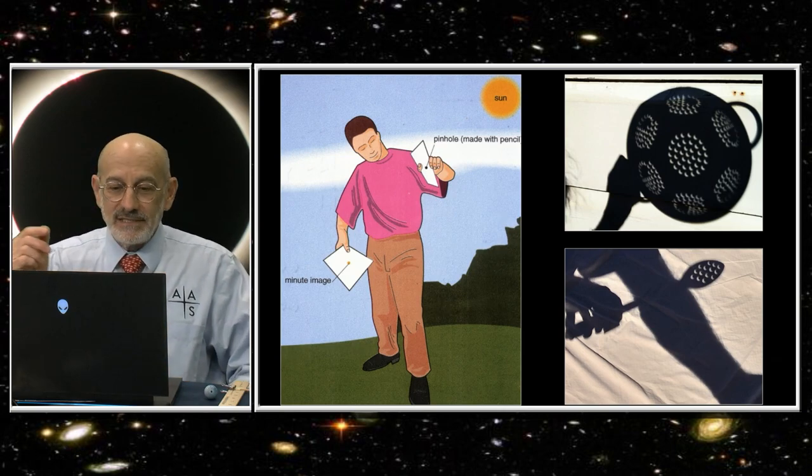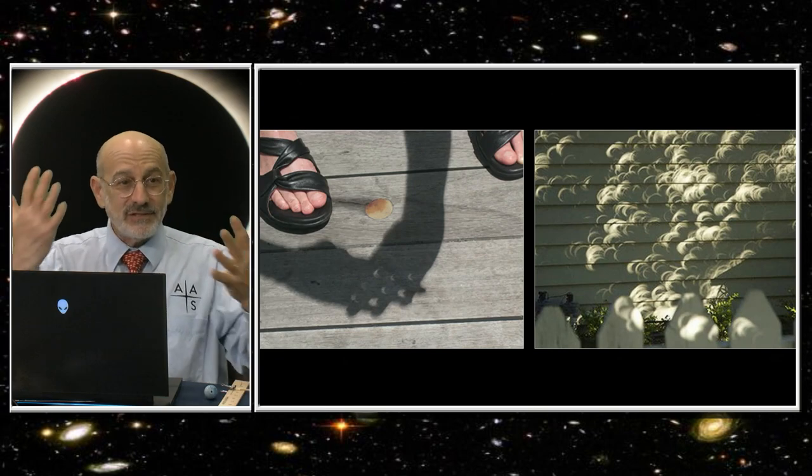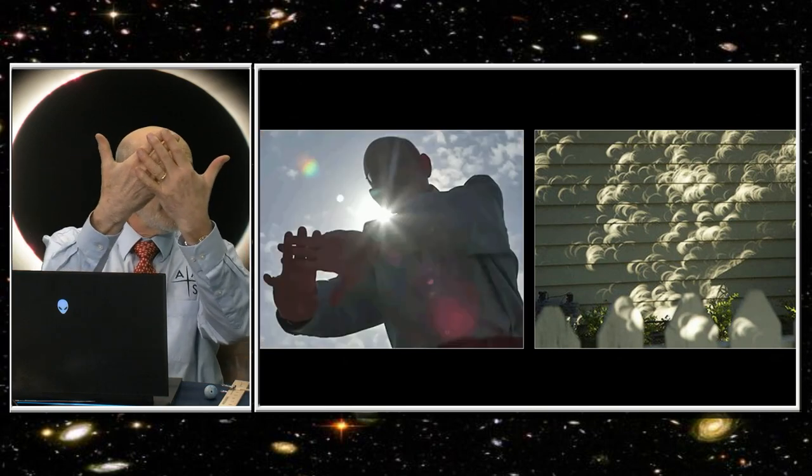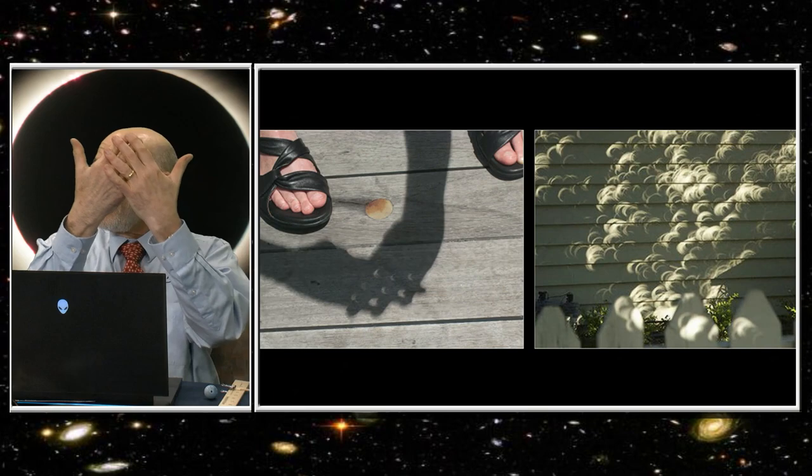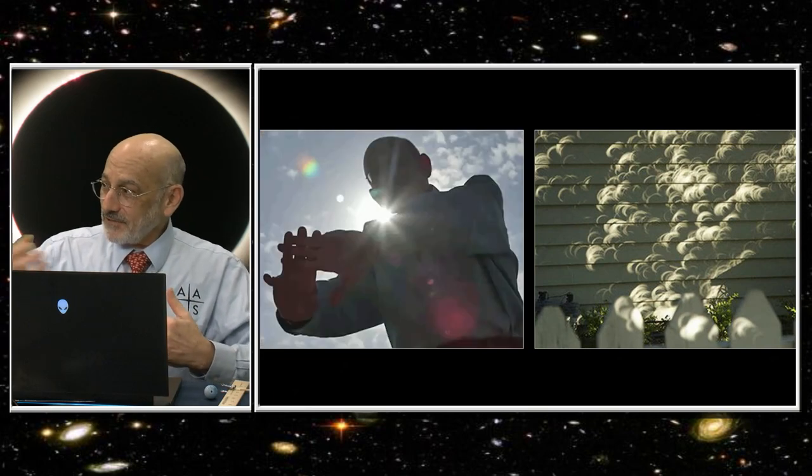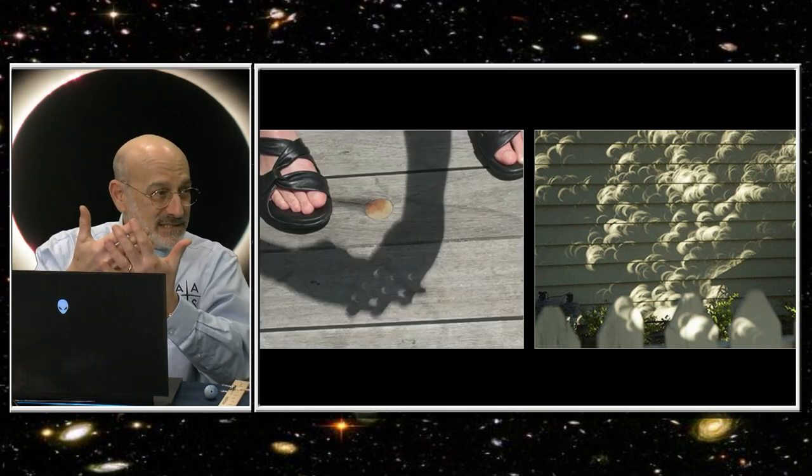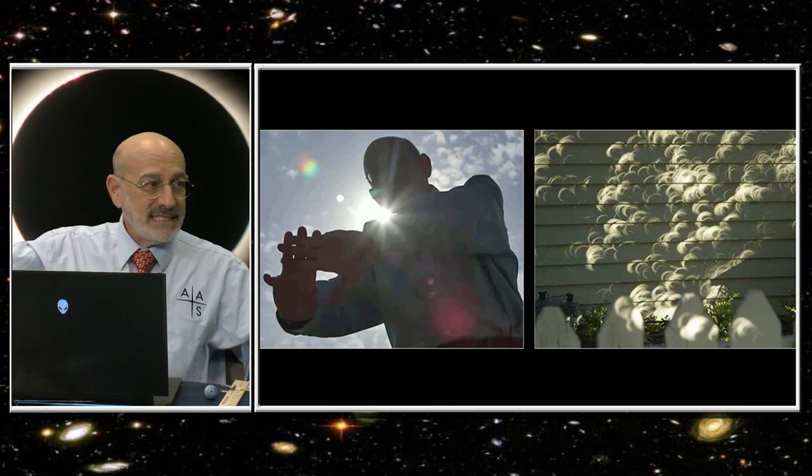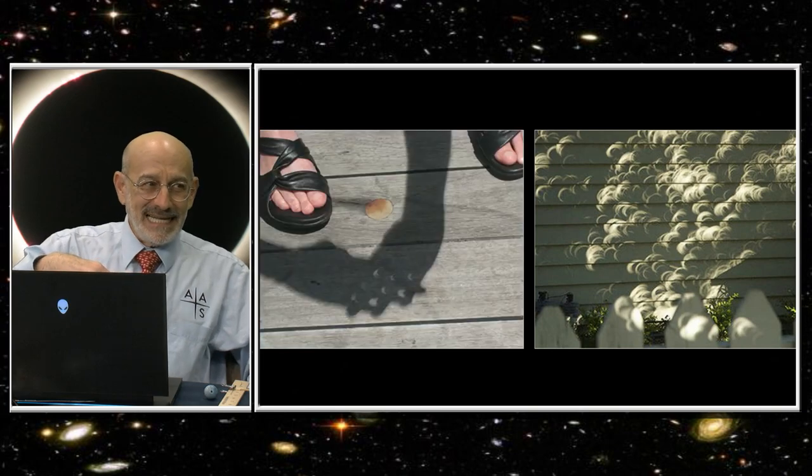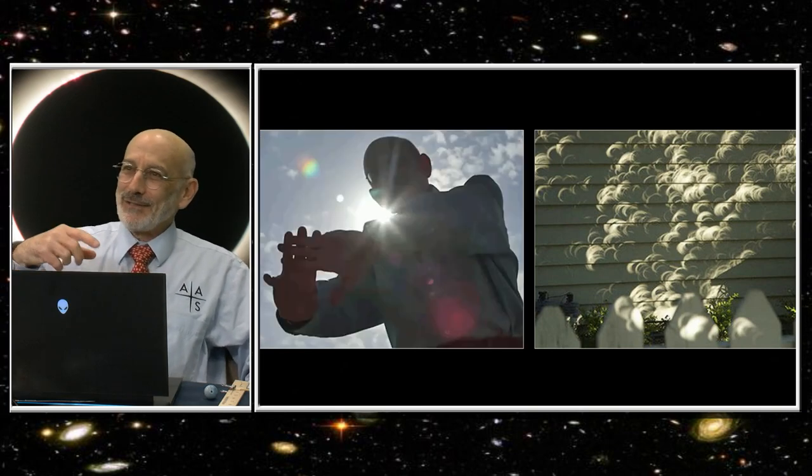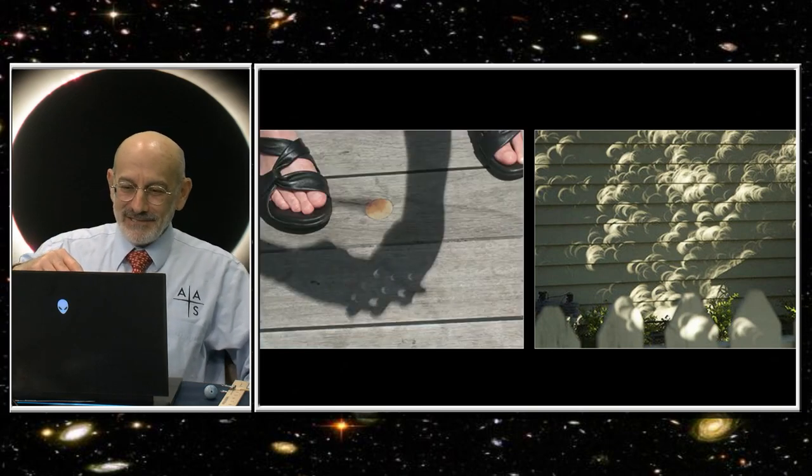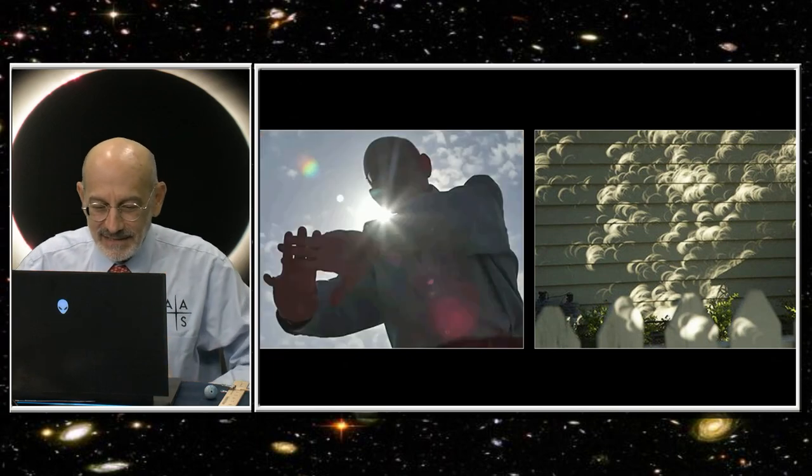If you don't want to do it that way, anything with a lot of little holes in it will work. You've got a spaghetti colander, you've got a slotted spoon. They will project pinhole images of the crescent sun during the partial phases, which is really cool. I heard that even Ritz crackers may work. People bring Ritz crackers. All kinds of fun things.